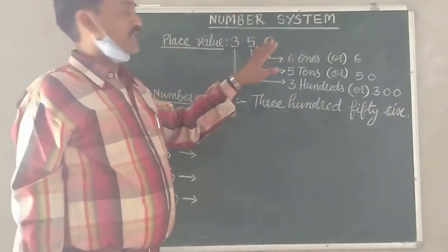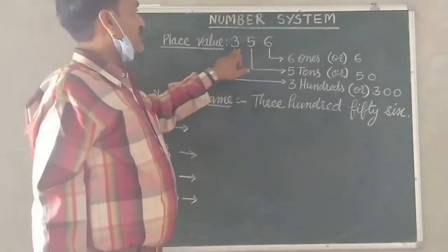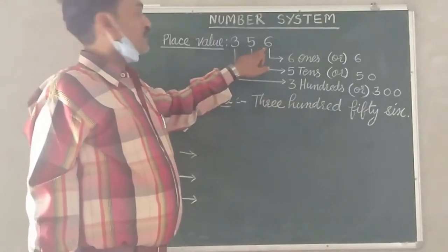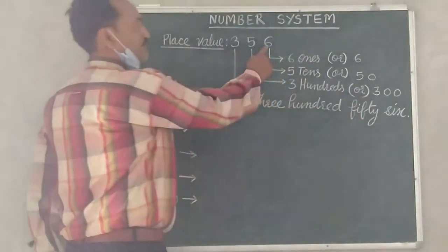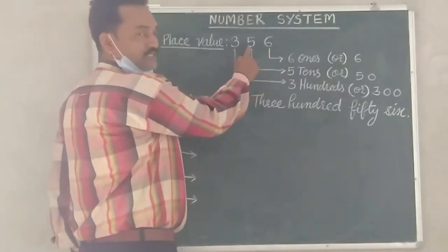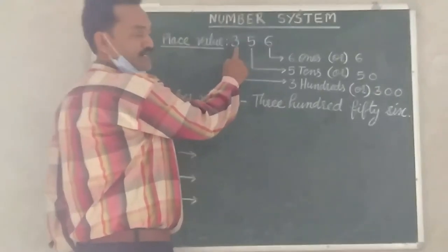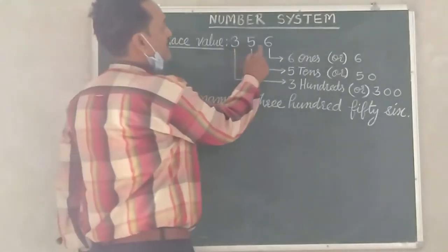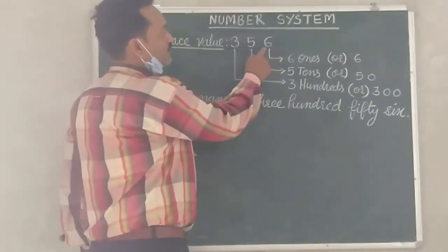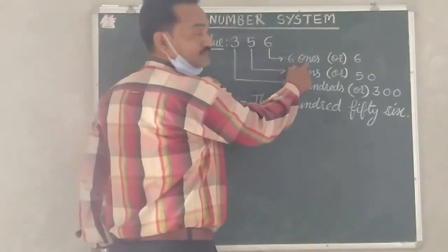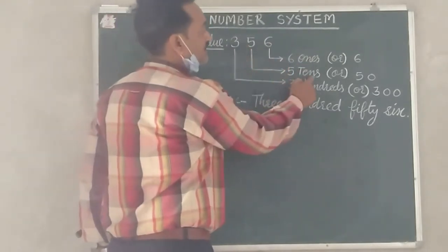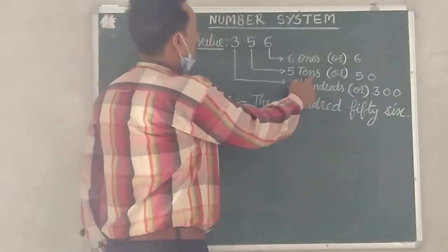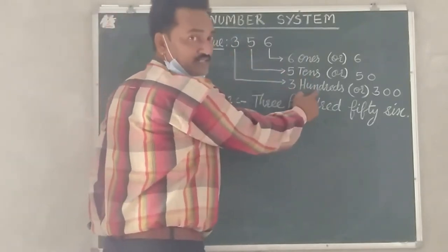As we bring this number, the number 356, there are 3 digits because there are 3 digits and the number goes to 100. So if we have place value, 6 ones because 6 is in ones place, 5 tens because 5 is in tens place, and 3 hundreds because 3 is in hundreds place.